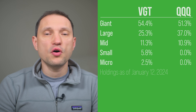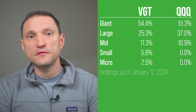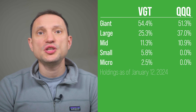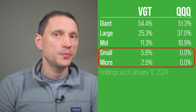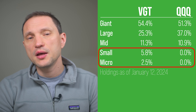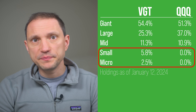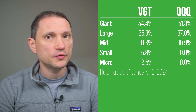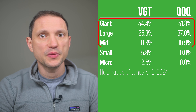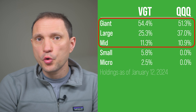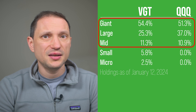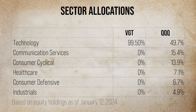Next is the size of portfolio companies in VGT versus QQQ. Unlike QQQ, VGT gives you some exposure to mid-cap as well as small-cap companies. Conversely, QQQ gives you exposure only to giant or large-cap companies, although VGT's exposure to mid- and small-cap companies at 8% is very small at best.